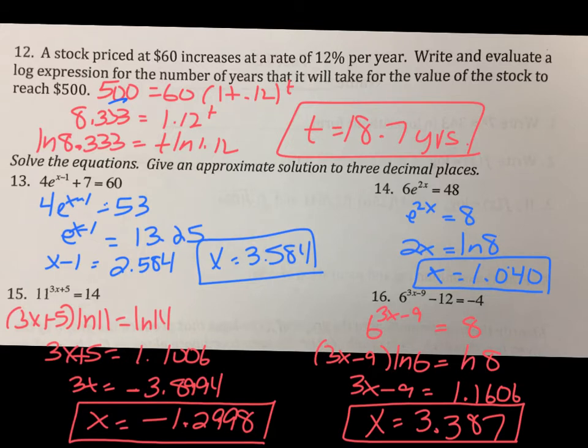This is what we did the day, 13 through 16. I moved the 7 over, divided by 4. Did natural log both sides. I got this and that. Moved the 1 over. I got my answer. 14 divided by 6. Do natural log of both sides. And I get natural log of 8 divided by 2. 15, 16, same way. Put the exponent in the front. Divide by the natural log. Moved the 5. Moved the 3. Number 16, moved the 12 over. This one you can do regular log if you want. Natural log if you want. Divide both sides by natural log 6. Move the 9 over. Divide by 3.